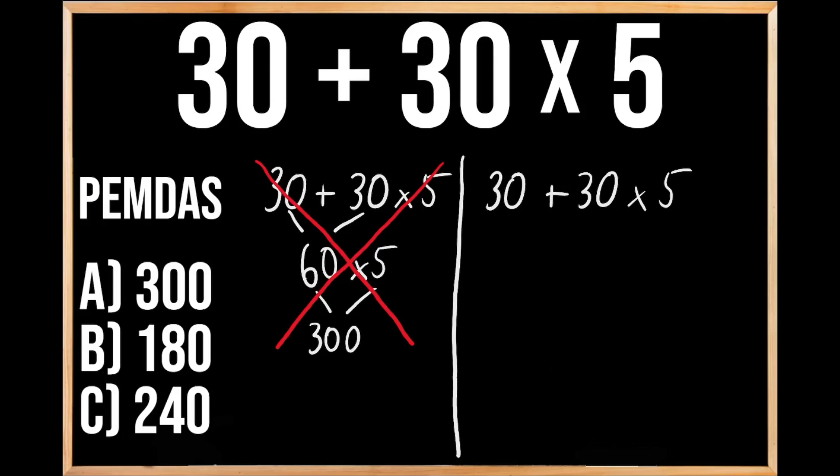So when solving this problem, first we need to deal with the multiplication. So we're going to be multiplying 30 times 5, which we know gives us 150, and then we're going to bring down the rest of the problem.